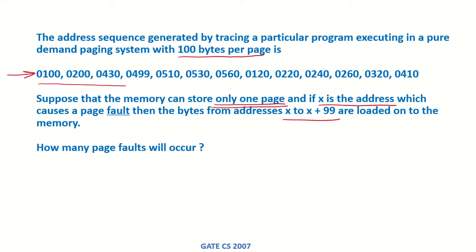We have this set of addresses, we have only one page in the memory, and if any address causes a page fault then that address plus 99 more addresses are being loaded into the memory. Let's see how many page faults this will cause.